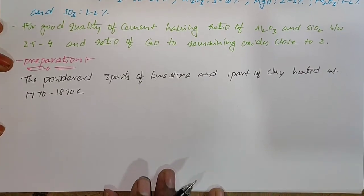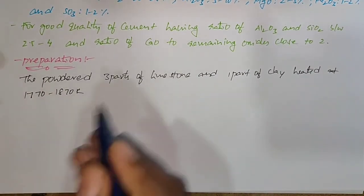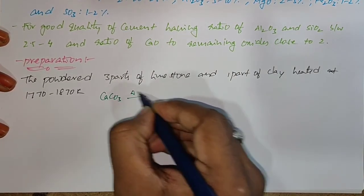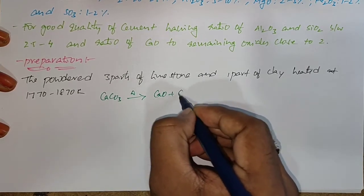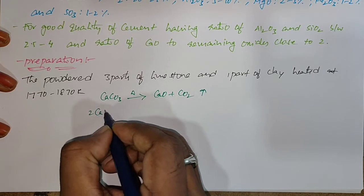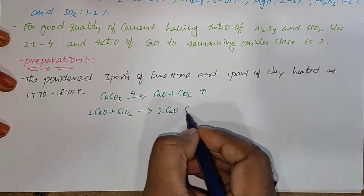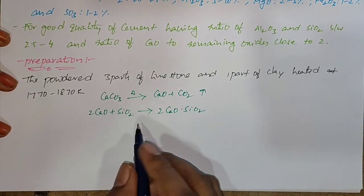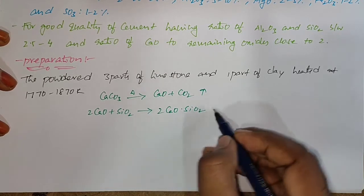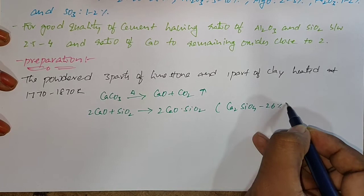Some reactions take place here. When Calcium Carbonate undergoes strong heating, it forms Calcium Oxide and liberates Carbon Dioxide. This Calcium Oxide then reacts with Silica to form Dicalcium Silicate, written as Ca2SiO4, which is nearly 26% of the complete composition.